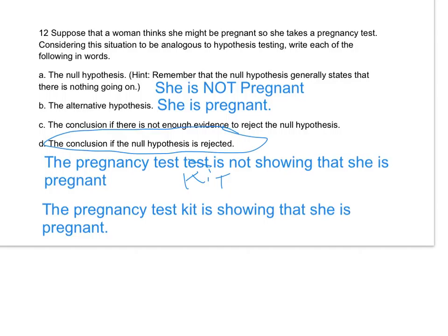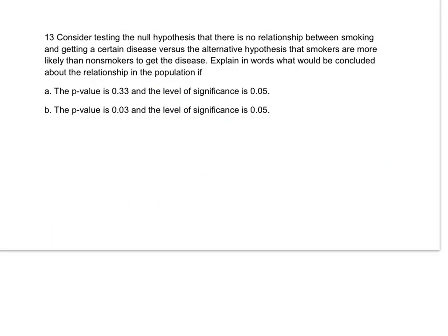So the alternative hypothesis—yep, it looks like she is pregnant. There's enough hormone present to get a positive result. And then the conclusion is there's not enough evidence. On the pregnancy test kit, it's not showing that she's pregnant. If I'm going to reject the null hypothesis, it looks like she is.